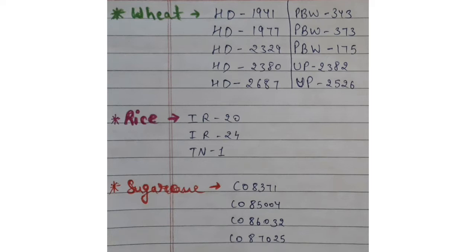I mean high-yielding variety — PBW, which stands for Punjab Wheat. This trick can help you remember what PBW means. So I'm going to help you remember: PBW — Punjab Wheat.